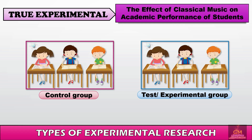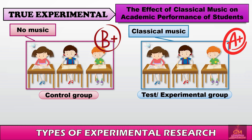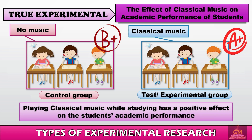At the end of the study, the researcher gives an assessment comparing the control group without music and the test group with music by looking at their academic performance. Based on this example, the conclusion is that playing classical music while studying has a positive effect on students' academic performance.